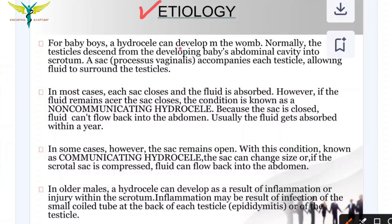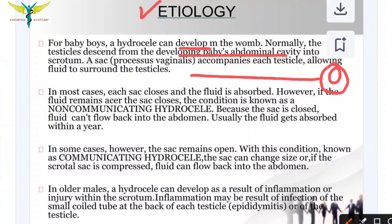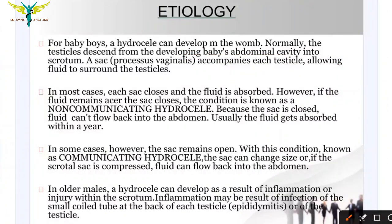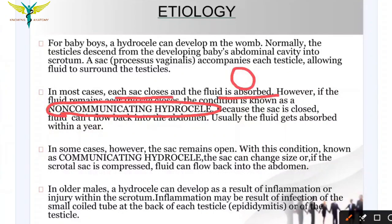In baby boys, during development in the womb, the testicles normally descend from the abdominal cavity into the scrotum. Around each testicle there is a sac called the processus vaginalis, which accompanies each testicle and allows fluid to surround it. In most cases each sac closes and the fluid is absorbed. However, if the fluid remains and the sac closes, this condition is known as non-communicating hydrocele.